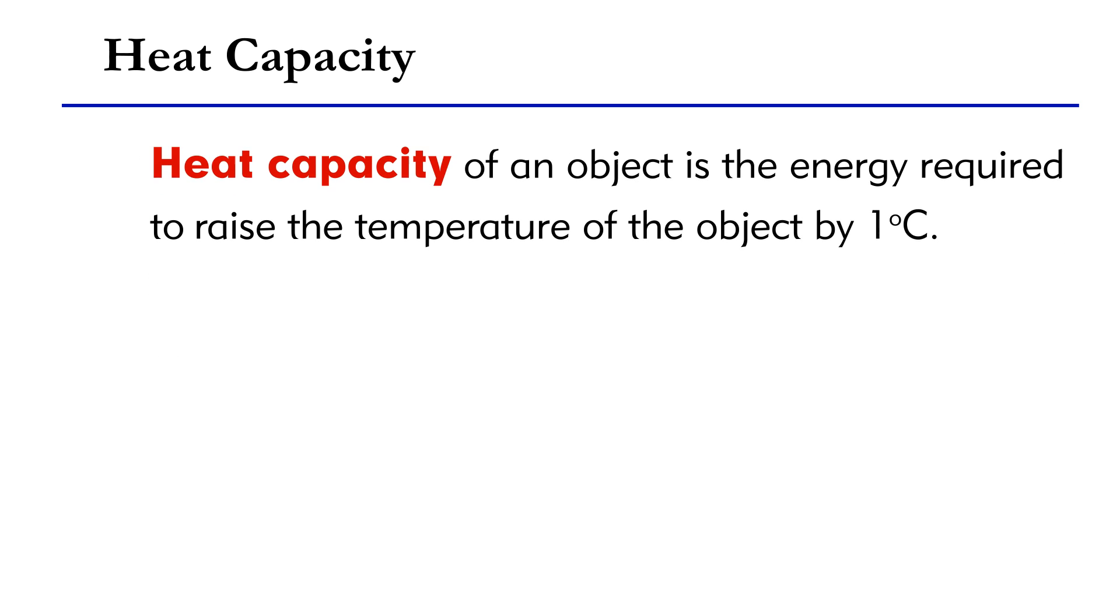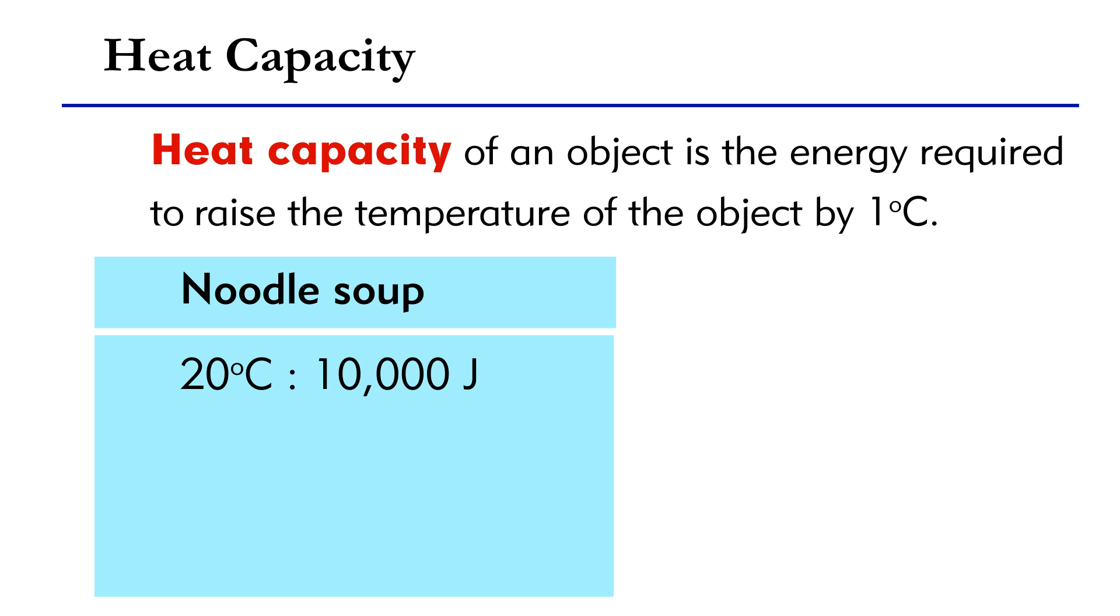In the above example, the noodle soup requires 10,000 Joules of energy to raise the temperature by 20 degree Celsius. Therefore, the energy required to raise the noodle soup by 1 degree Celsius is 10,000 Joules divided by 20 and the result is 500 Joules. That is, the heat capacity of the noodle soup is 500 Joules per degree Celsius.